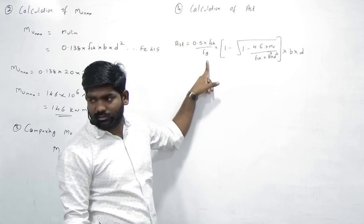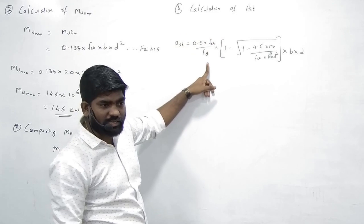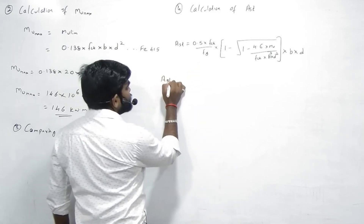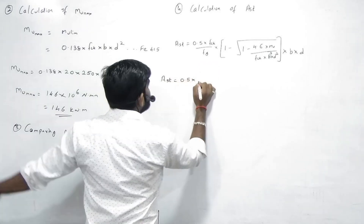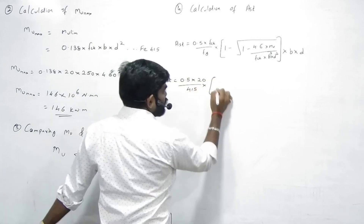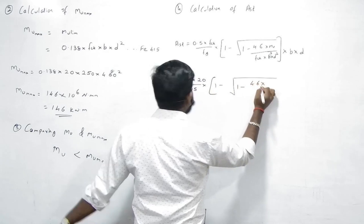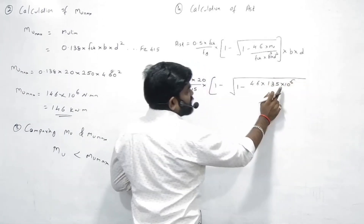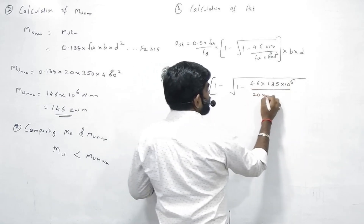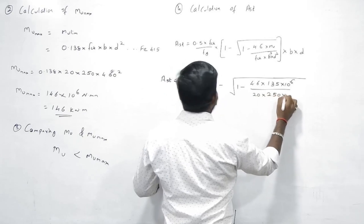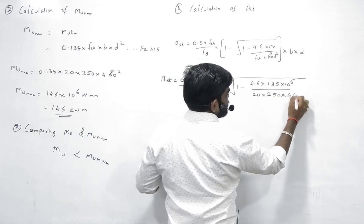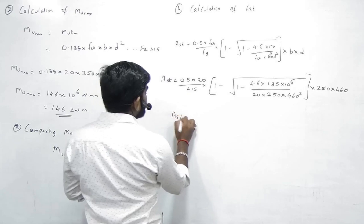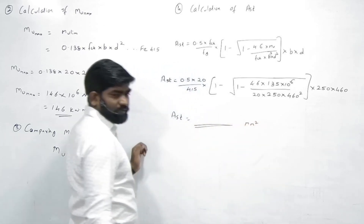Yeh formula slab mein bhi lagega, footing mein bhi lagega, column mein bhi lagega — har jagah. Toh isko acche se yaad karo. FCK = 20, FY = 415, substituting: 1 minus under root 1 minus 4.6 × MU (135 × 10^6) upon FCK × B × d² — 10 raise to power 6 mistake karte hain bachche, bhool jaate hain.